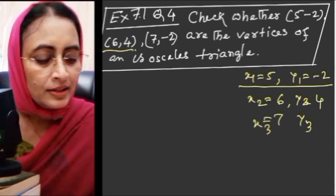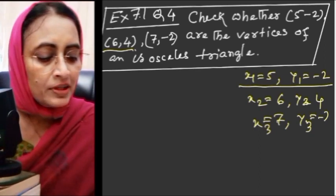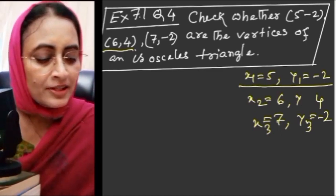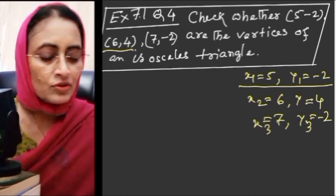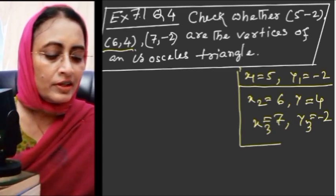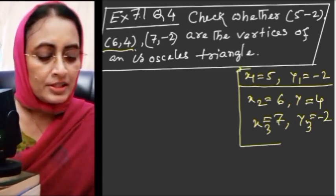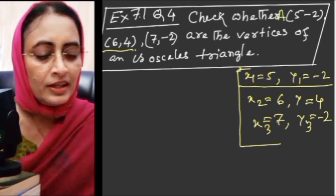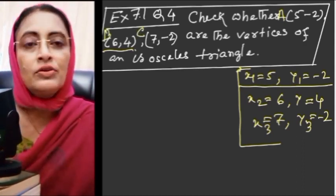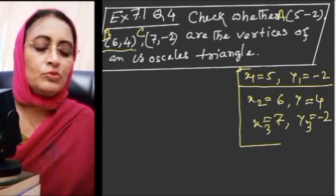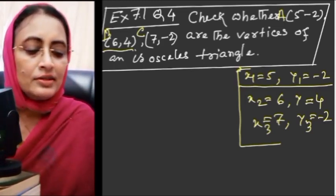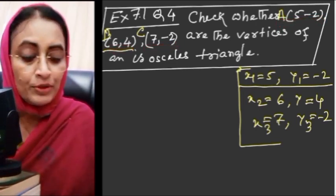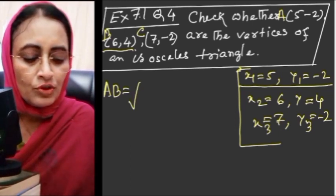x1 = 5, y1 = -2; x2 = 6, y2 = 4; x3 = 7, y3 = -2. Writing these coordinates clearly avoids silly mistakes with plus/minus signs, which are common in coordinate geometry. Let us label the three points as A, B, and C.